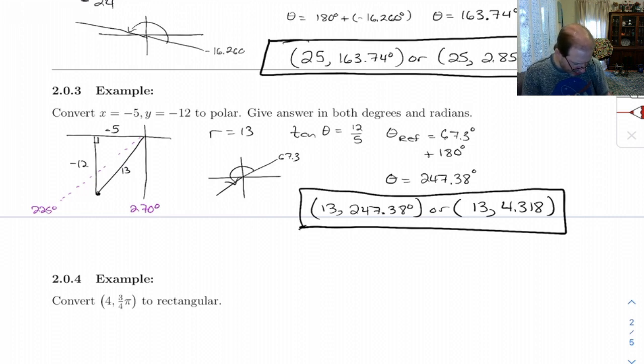It's interesting, a lot of calculators have built-in functions for converting between polar and rectangular. Even this little tiny Casio that I've got has a, if you look on it down here, it's got,